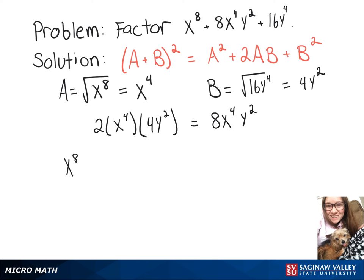So we can rewrite x to the 8th plus 8x to the 4th y squared plus 16y to the 4th as x to the 4th plus 4y squared quantity squared.